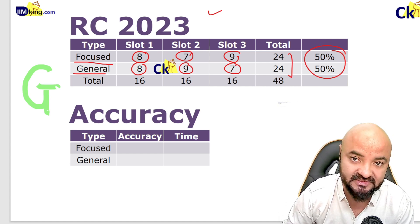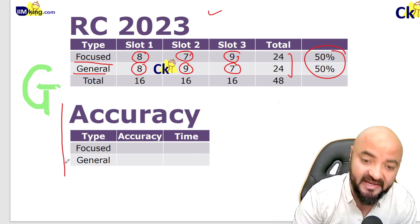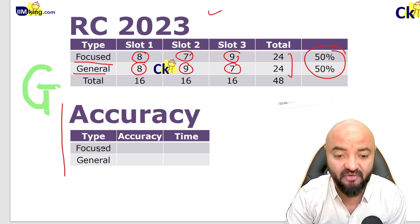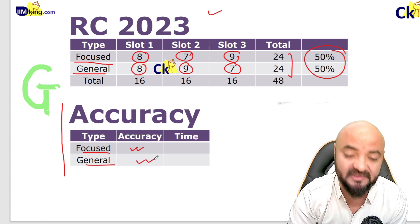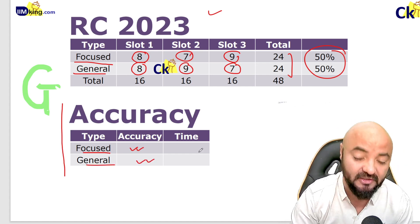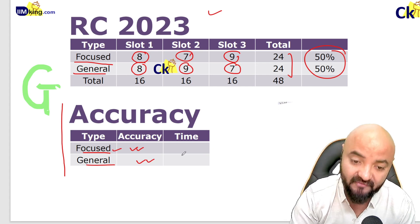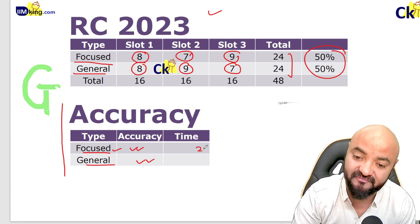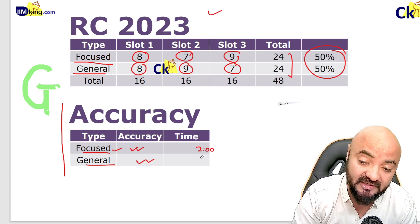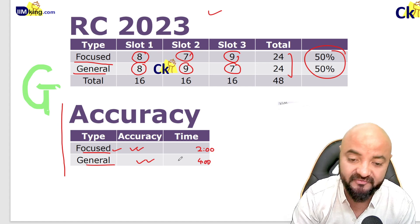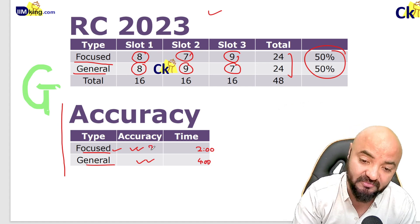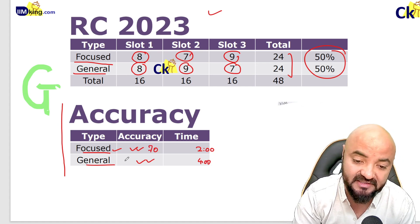Today you need to find your accuracy on focused RC questions and your accuracy on general type questions - with a timer. You'll be surprised: for focused questions your timing is half. Suppose you are taking two minutes per question on focused, you are taking three to four minutes per question on general. Time becomes half, accuracy is obviously more. My accuracy on focused is around 70 percent and on general it is around 50 percent.